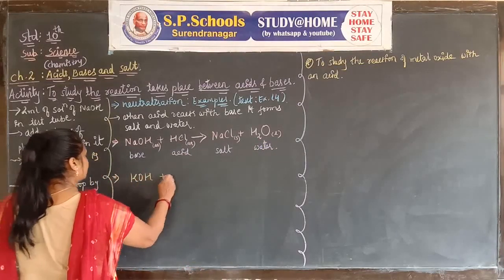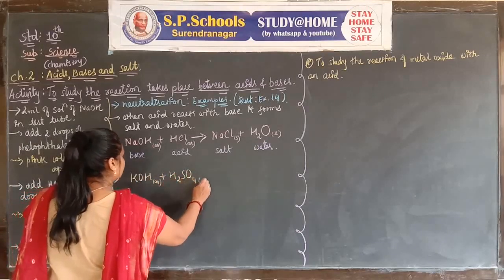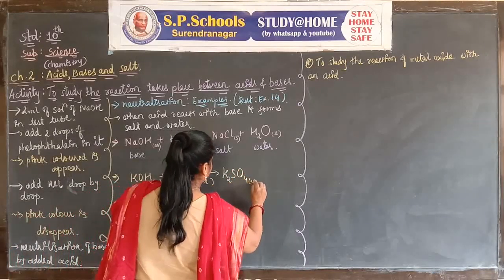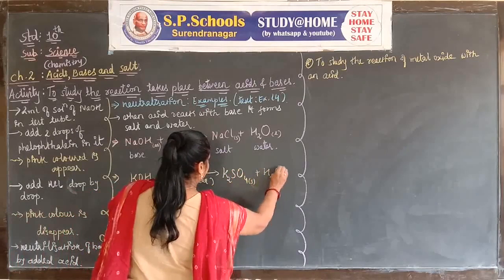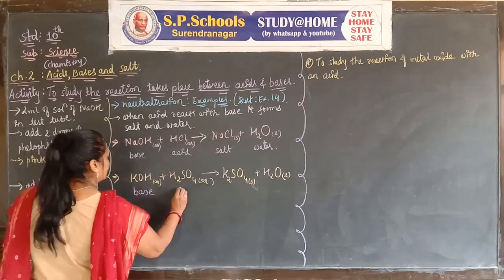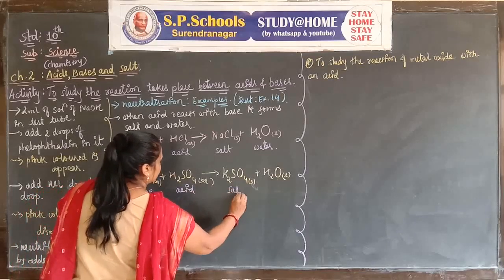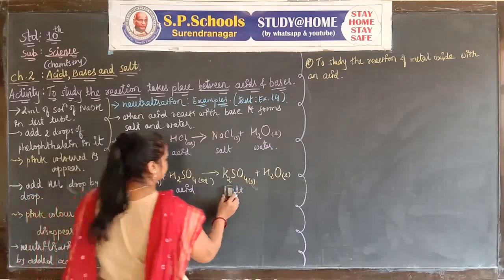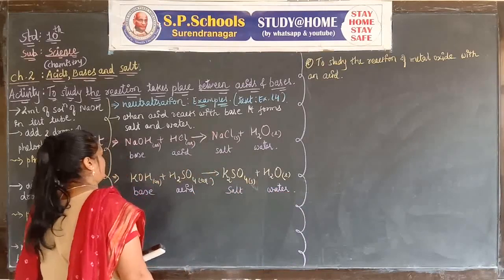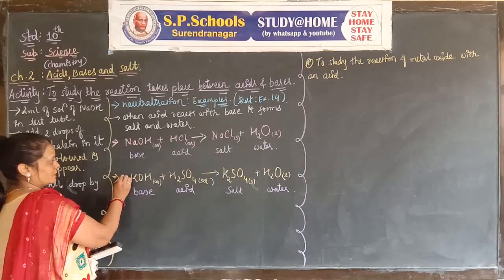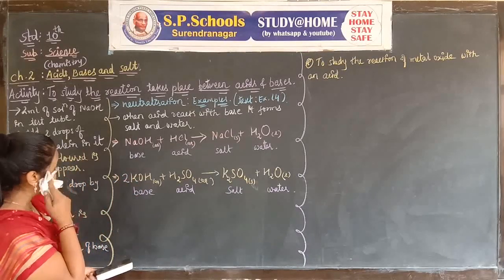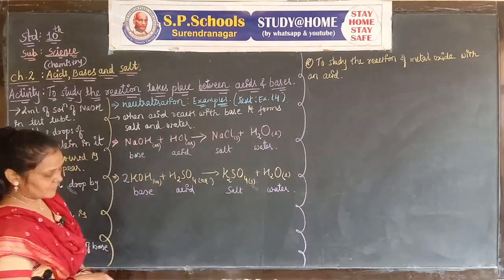Another equation: KOH with H2SO4 gives K2SO4 (potassium sulfate) plus H2O. Here base plus acid gives salt plus water. To balance the equation, we put 2 before KOH: 2KOH plus H2SO4 gives K2SO4 plus 2H2O. The equation is now balanced.